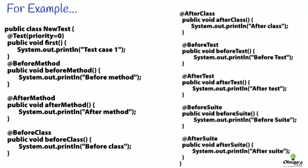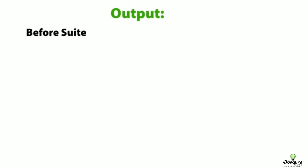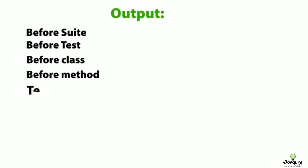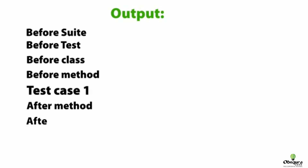Now let's see an example of TestNG annotations. Can you guess the output of this program? The output will be: first @BeforeSuite, then @BeforeTest, then @BeforeClass, then @BeforeMethod, then @Test, then @AfterMethod, then @AfterClass, then @AfterTest, and finally @AfterSuite. This is the flow of this program.